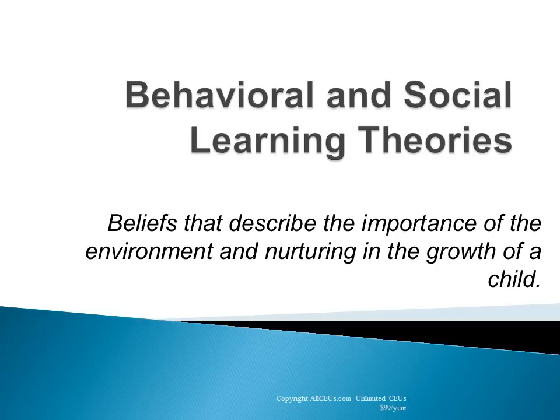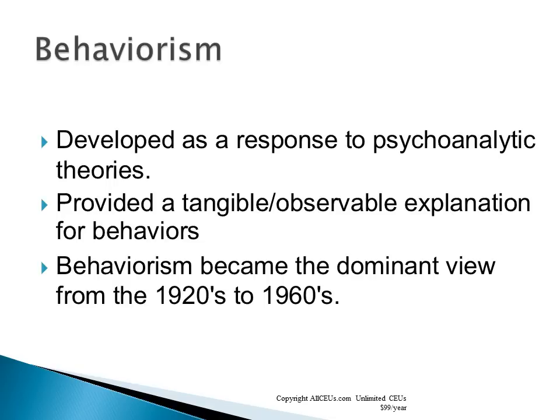Behavioral and social learning theories believe that the environment and nurturing are imperative to a child's development. Behaviorism developed as a response to psychoanalytic theories. Behaviorists rely on what is observable and measurable — all that goes on inside the head is not their concern. Behaviorism wanted tangible, observable explanations and became the dominant view from the 1920s to the 1960s.